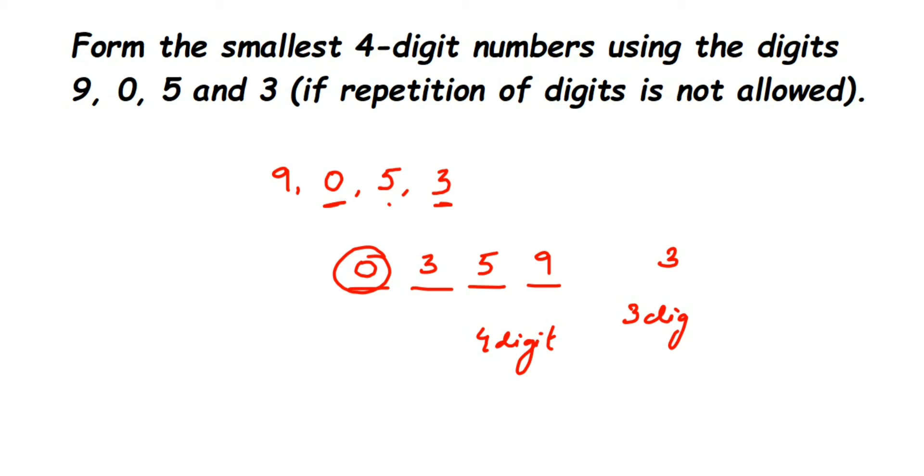So in such cases where you have a zero given, what you have to do is interchange. Instead of writing the smallest digit, which is zero, we're going to write down the next smallest digit, which is 3. So I'm going to erase this part.